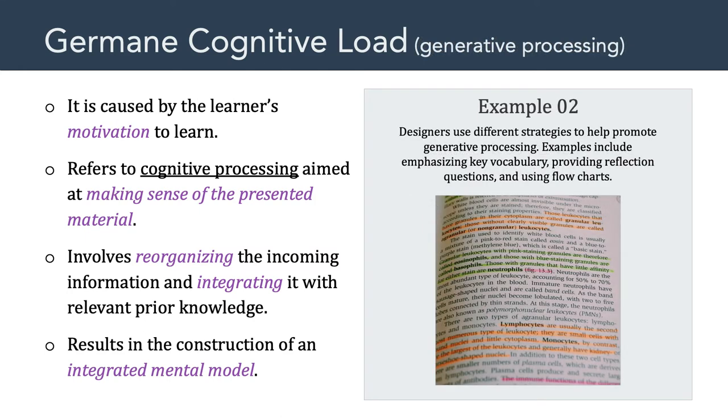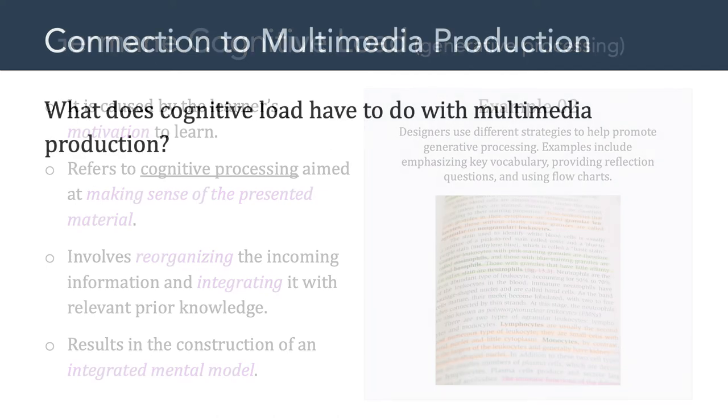That means that the student has used their germane processing to make sense of the material and connect it to something they already know. That's the result of germane cognitive processing. Now, another example can be seen here with this highlighted text. In this example, designers have used different strategies to help promote generative or germane processing. Examples include emphasizing key vocabulary, providing questions, and using flowcharts. Those are all strategies to help promote germane cognitive load, which is related to generative processing.